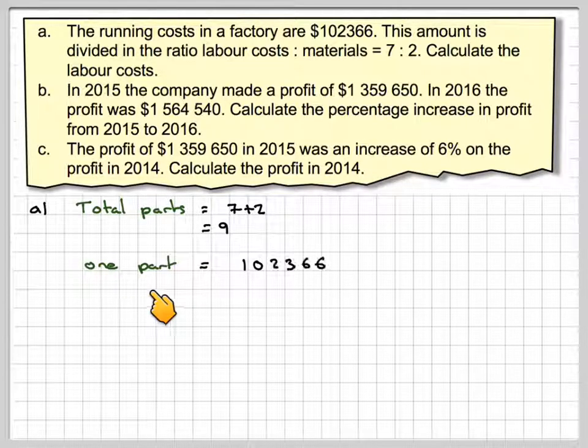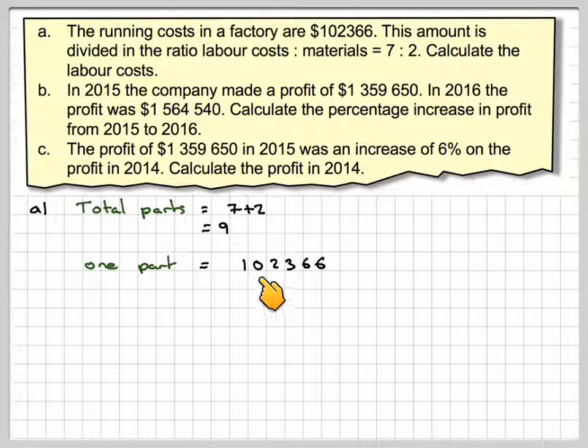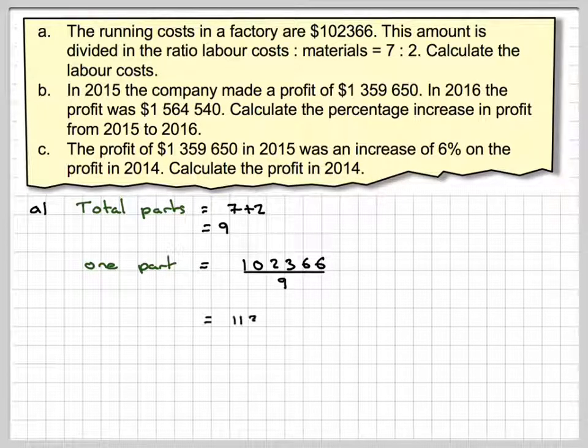And then one part, that's what we're going to find out, is going to be the total amount, which is 102,366 divided by 9. That gives me $11,374.